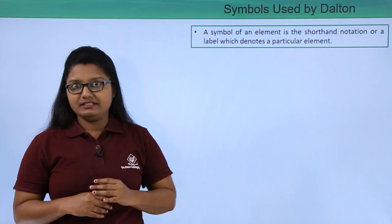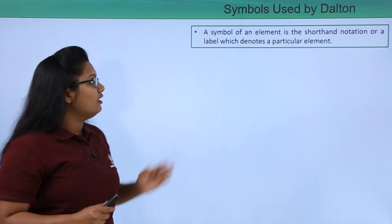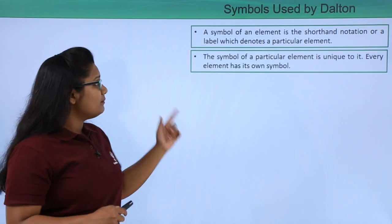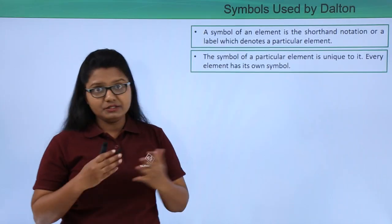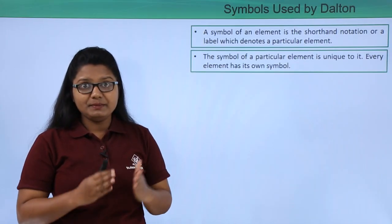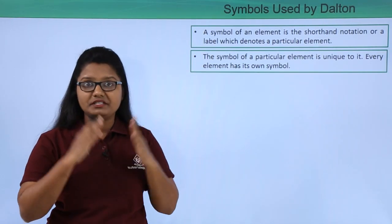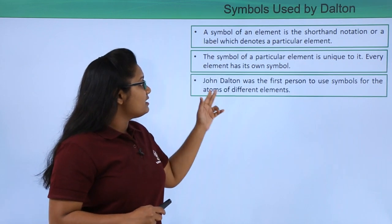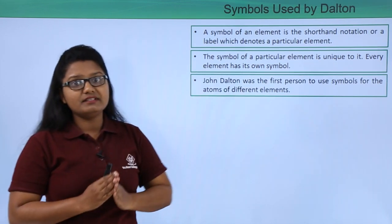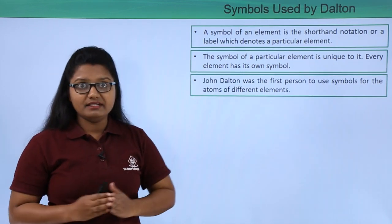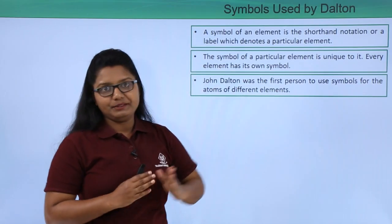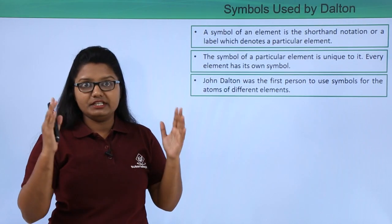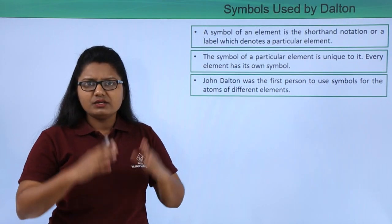This shorthand label is called the symbol of the element. The symbol of a particular element is unique to it, meaning every element has its own particular symbol. The first person to make use of symbols to represent elements was John Dalton.